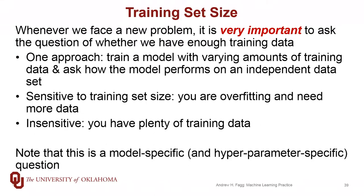In general, any time we're faced with a new machine learning problem, it is extremely important to understand how much training data we really need. One approach is to try training our models with varying amounts of training data and ask how the model performs on an independent data set as a function of how much training data is available. If your model is sensitive to training set size, that probably tells you that you are overfitting your data — if you increase or decrease training data a little bit and performance on an independent data set changes, we're probably overfitting.